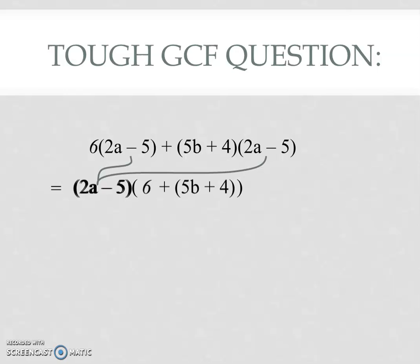Now in this case, the second bracket has a bracket inside. We can simplify this by removing that inside bracket and recognizing there are like terms for the 6 and the 4.